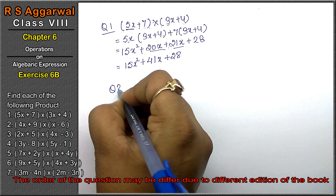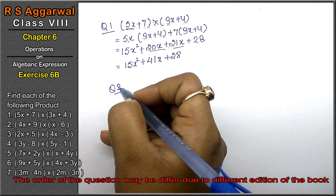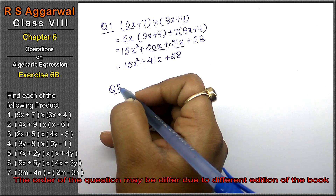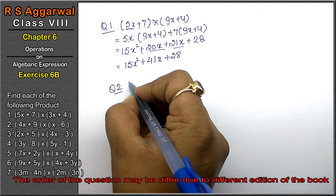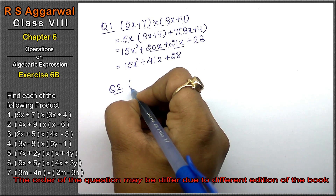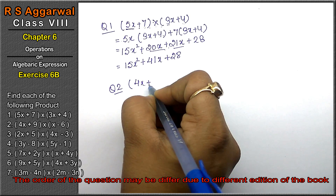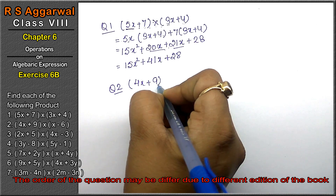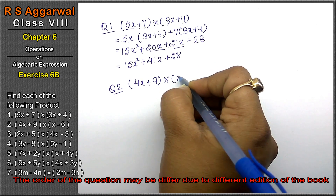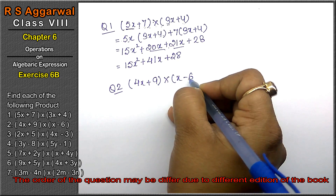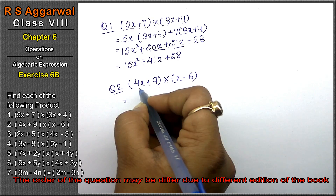Let's do question number 2 of Exercise 6B, that is algebraic expressions. Question number 2 is: bracket (4x + 9) multiplied by (x - 6). So how will we do it?